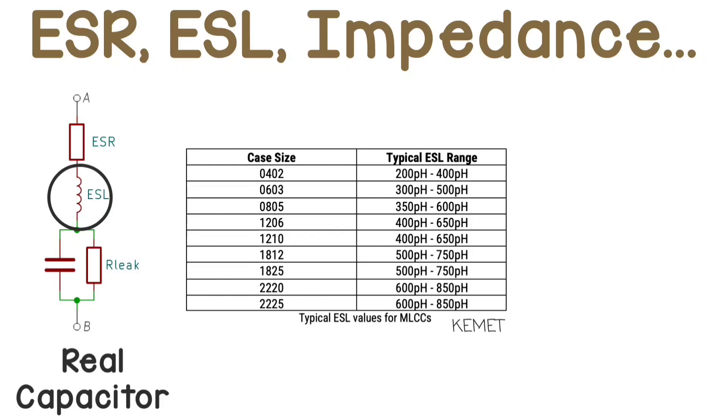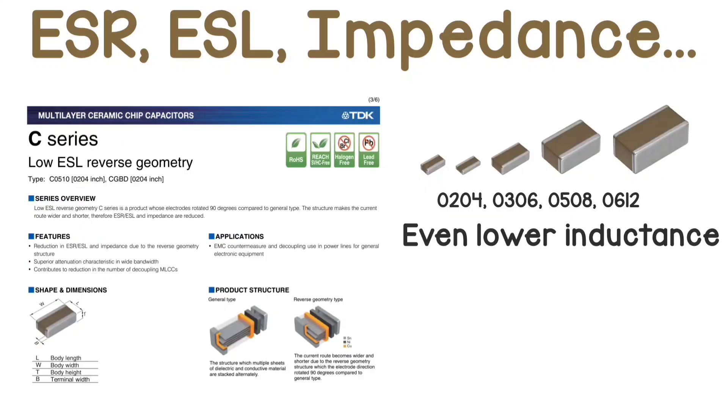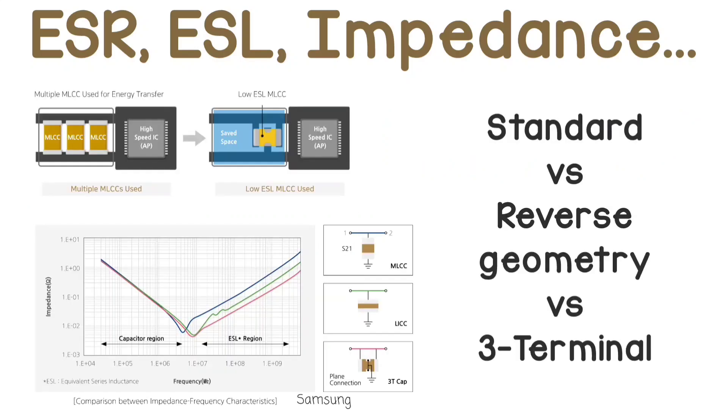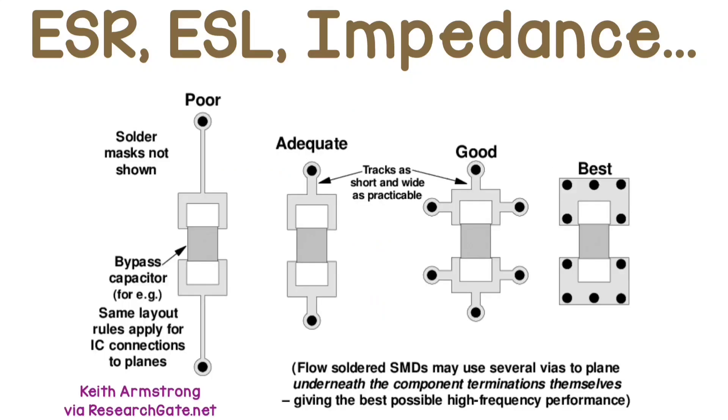Back to ESL, these are some inductance values depending on the package of our capacitor. For THT, the ESL will be bigger because of the long leads. Manufacturers have also reverse geometry packages with lower inductance, and these are especially useful if you want to work at higher frequencies. Just be careful of your PCB layout.